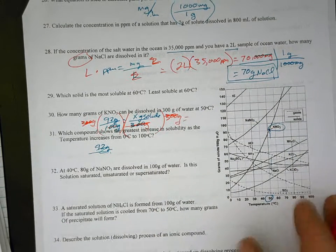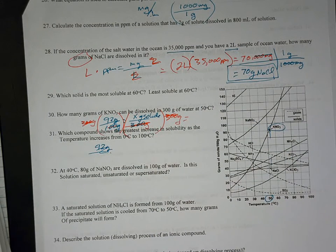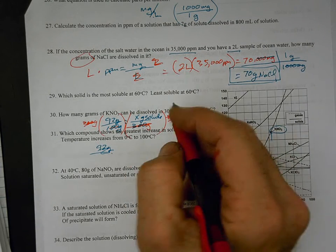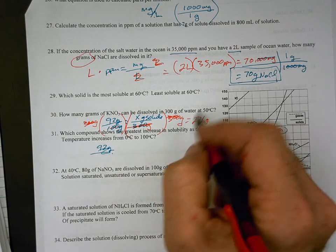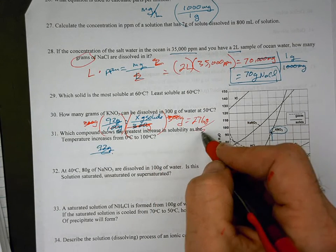We calculated this last time. 276 grams of solute would be in the 300-gram sample.